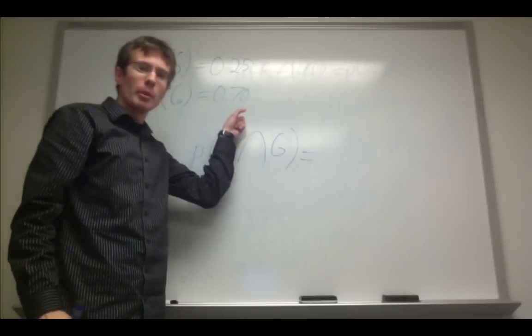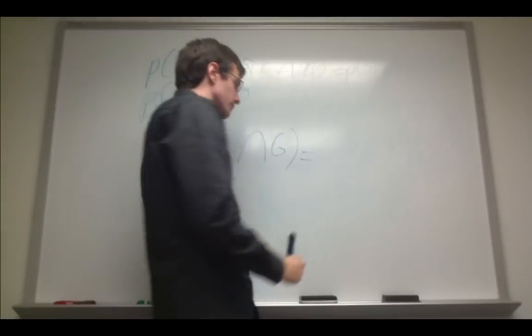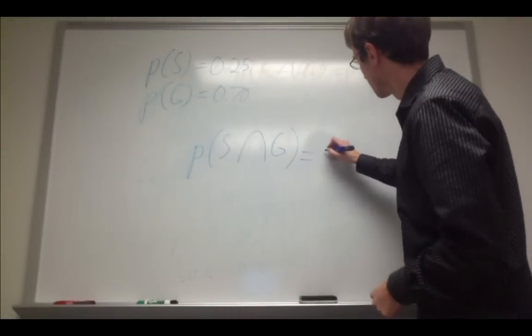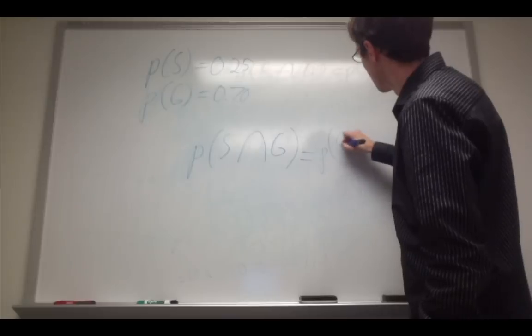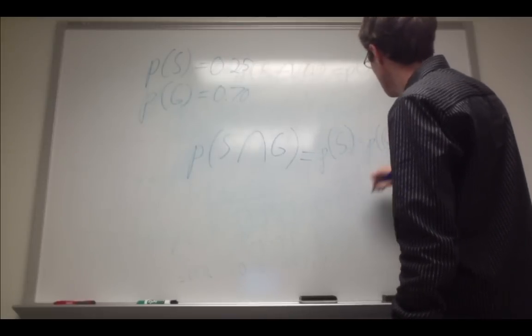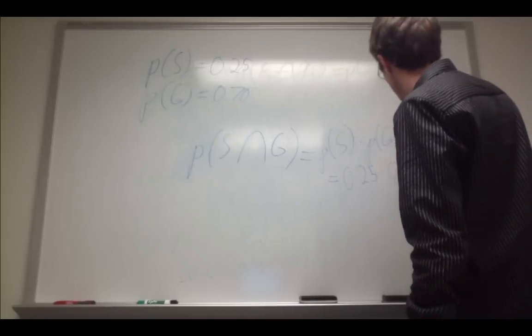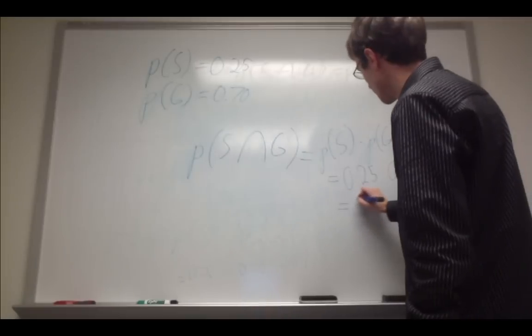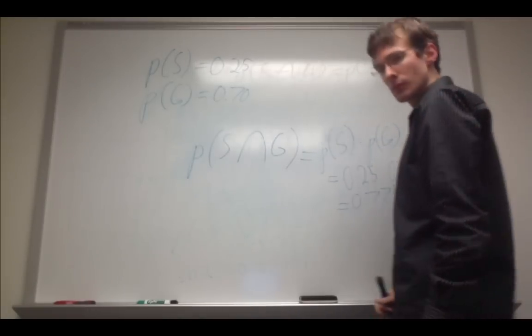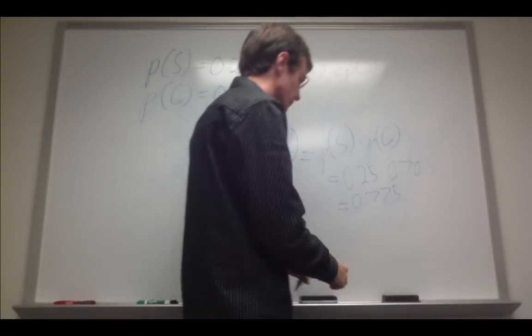To calculate this probability, I simply take the product of these two probabilities because we assume that they're mutually exclusive. This is P of S times P of G equals 0.25 times 0.70, which equals 0.775. Sorry, 0.175.